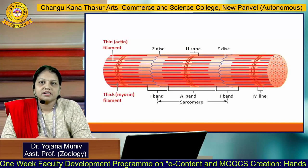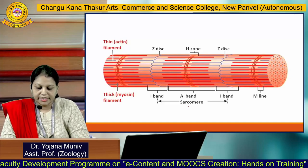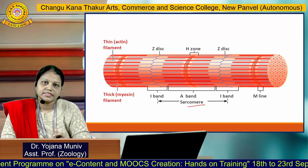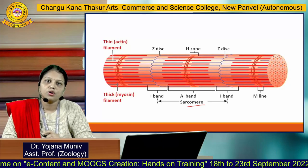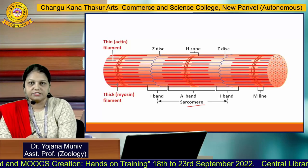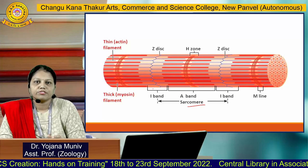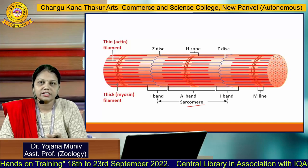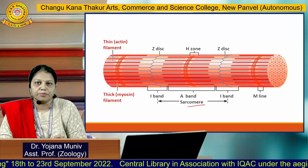This muscle fiber is made up of sarcomeres. A sarcomere is a single muscle cell. Many single muscle cells arranged horizontally form a long muscle fiber. The sarcomere is differentiated by the Z disc, which serves as the boundary of the sarcomere. From one Z disc to the next Z disc is one sarcomere.